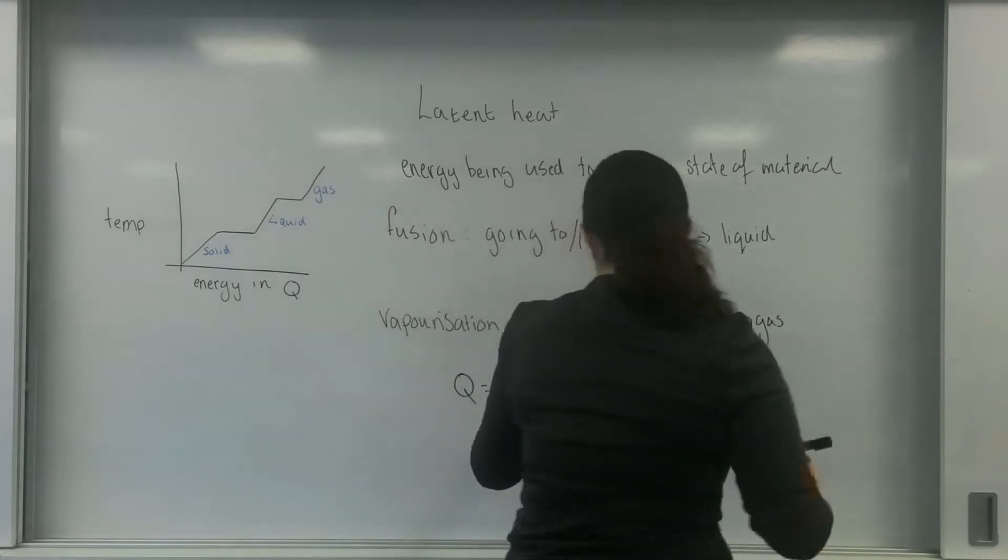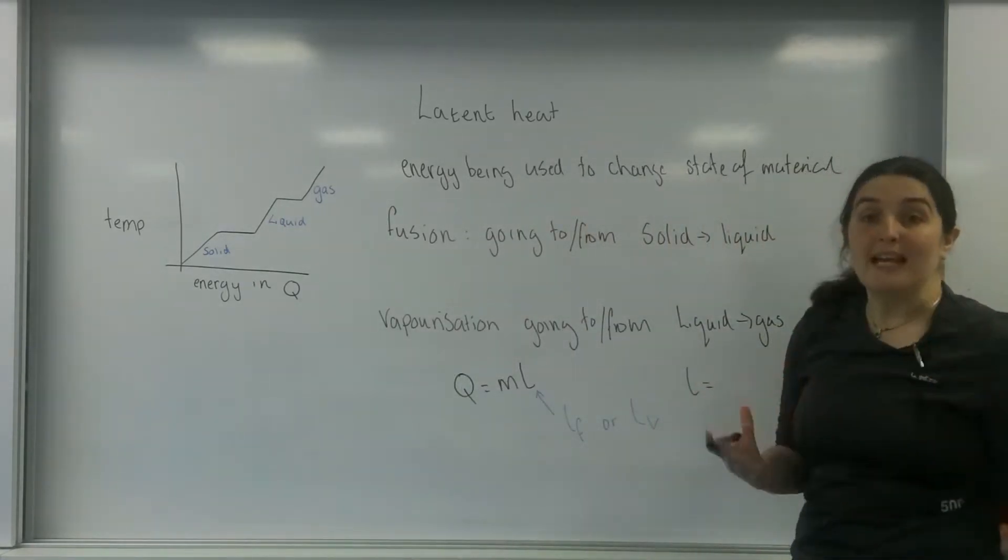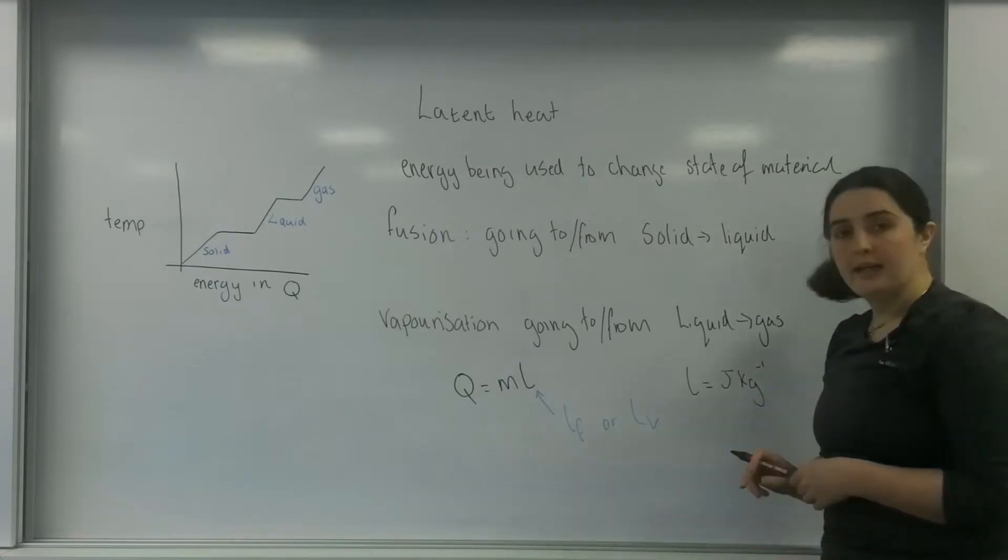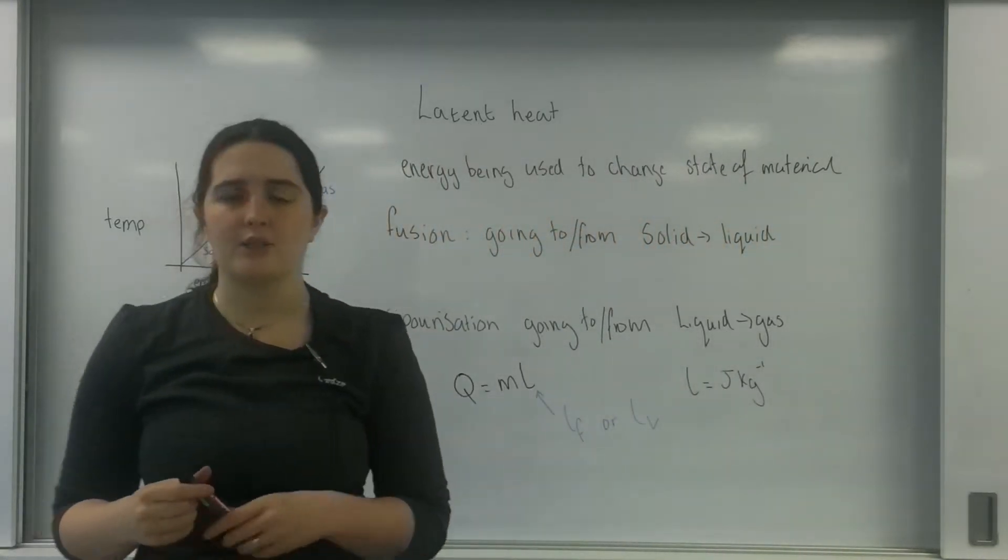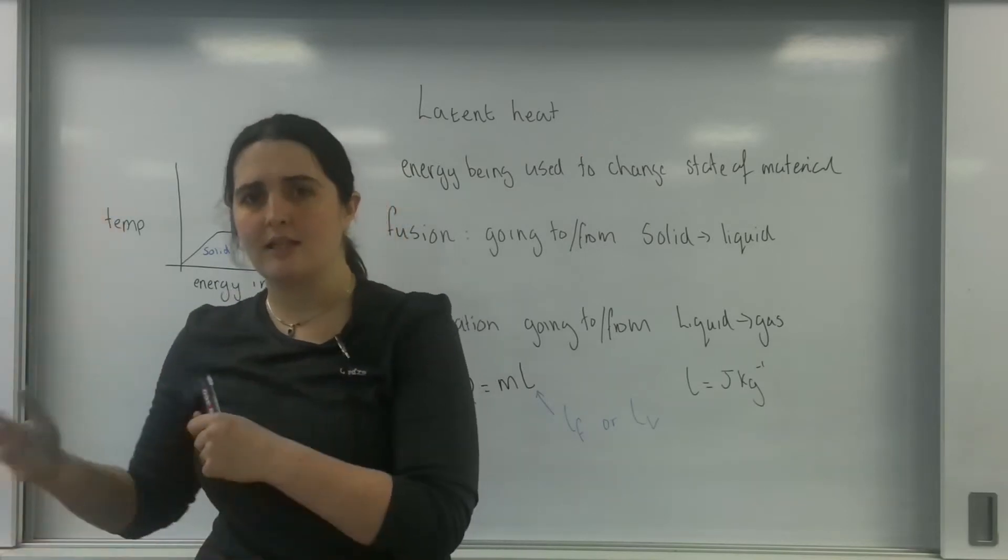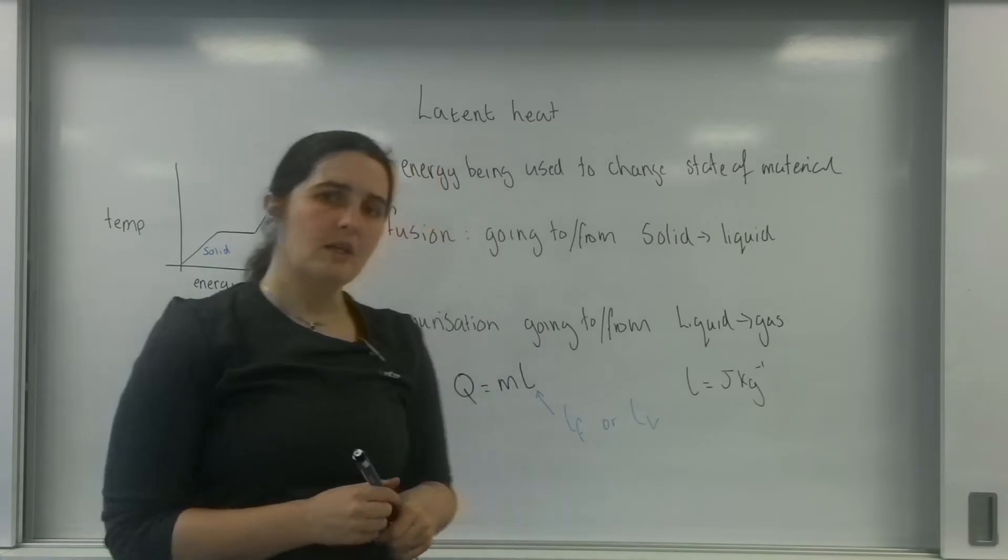So the units for the latent heat are going to be joules per kilogram. It does make sense. If I had a 10 tonne block of ice compared to a gram of ice, it's going to take me much more energy to melt that big block of ice than the tiny little one.